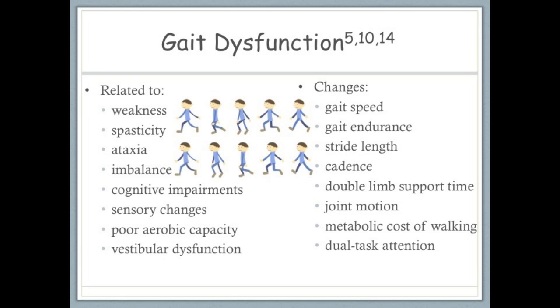Gait changes that occur in people with MS include decreased gait speed and endurance, decreased stride length, cadence, and increased double limb support time, and less efficient lower extremity joint motion and increased cost of walking.